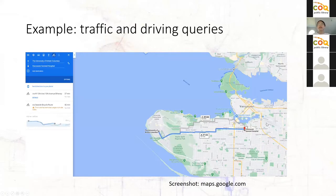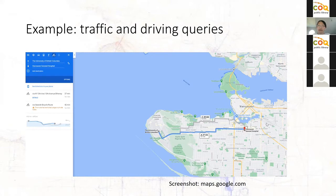I'm going to show you two examples of GIS. The first example is Google Maps. The important thing to remember is Google Maps is not just a map — you don't use Google Maps the same way you use a print map. What Google Maps allows you to do is put in a starting point and an ending point, and Google tells you an optimal direction. So you are actually using a GIS that enables traffic and driving queries. The map is just an interface — there's a database behind it running a routing analysis.